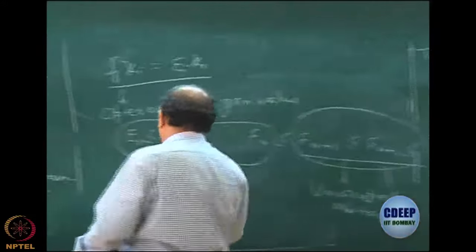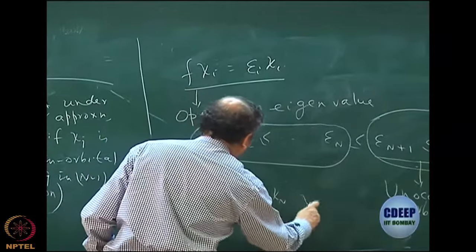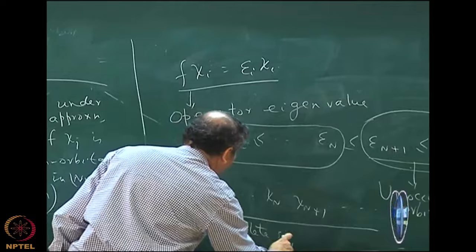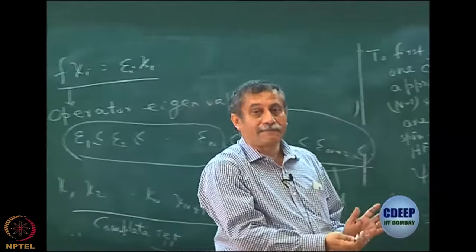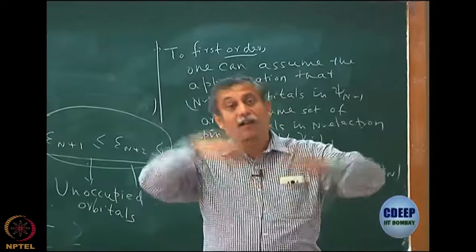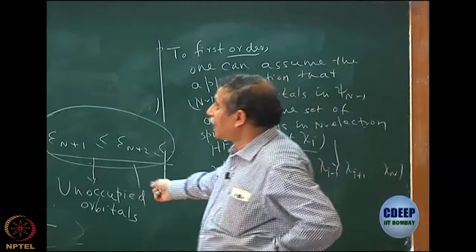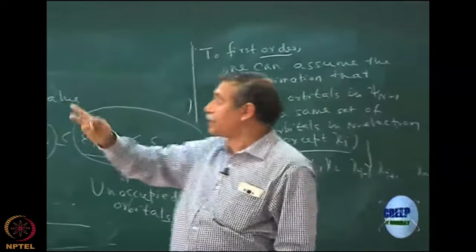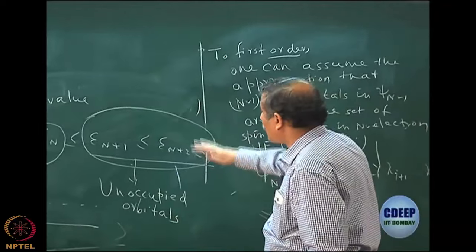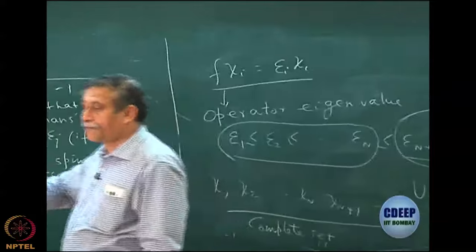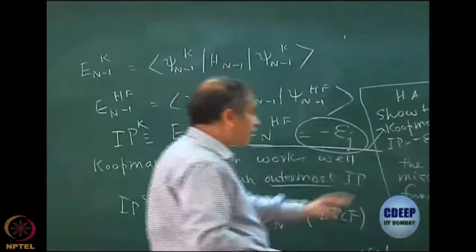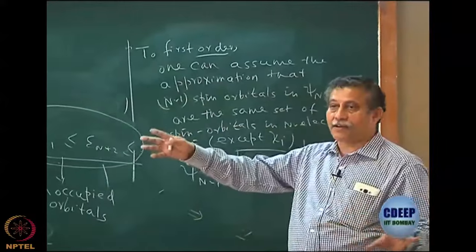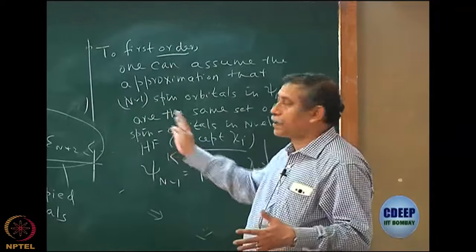In the process of solving the eigenvalue equation, I also get spin orbitals beyond N, because it has infinite eigenfunctions and eigenvalues. The spin orbitals from N+1 onward are called unoccupied orbitals. They will have a very important role in quantum chemistry, particularly when I come to electron correlation. Note that together, all these orbitals — chi_1, chi_2, ..., chi_N, chi_{N+1}, ... — form a complete set of spin orbitals, not just the N occupied ones. All eigenfunctions of a Hermitian operator form a complete set, and of course, f is a Hermitian operator.